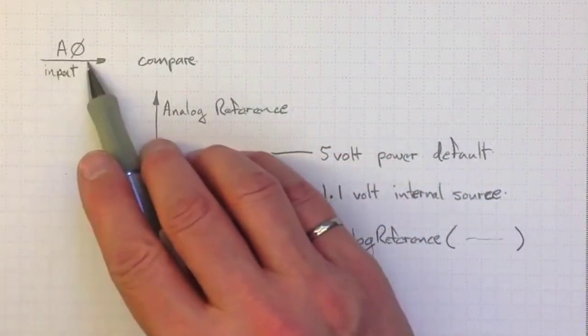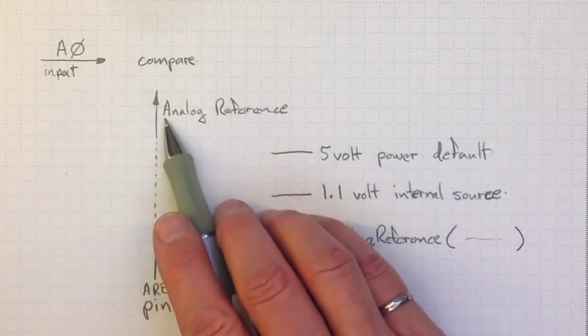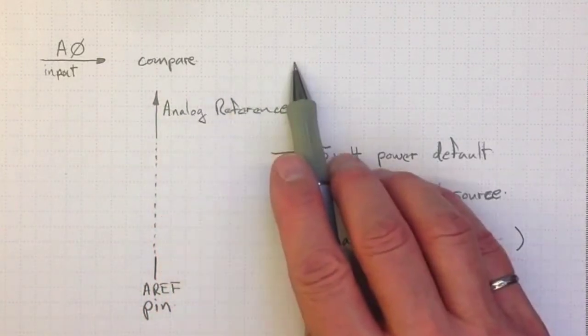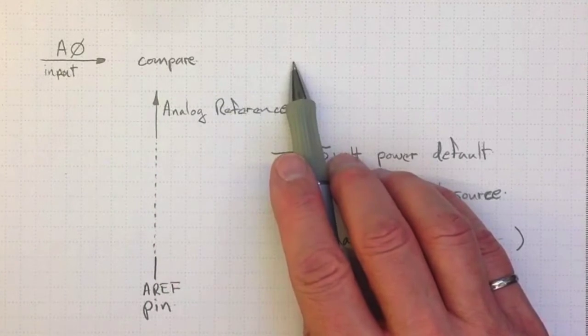For example, if this is 2.5 volts and the analog reference voltage is 5 volts, the output will be something around 500, or about half of the overall scale.